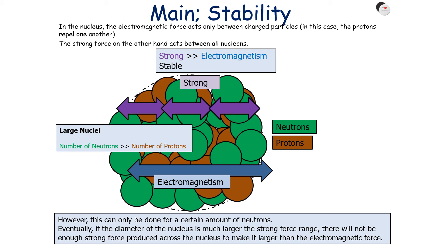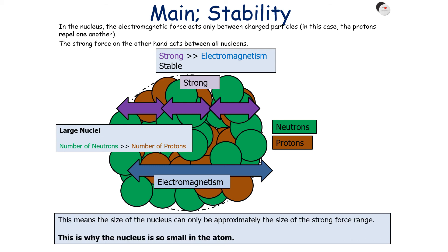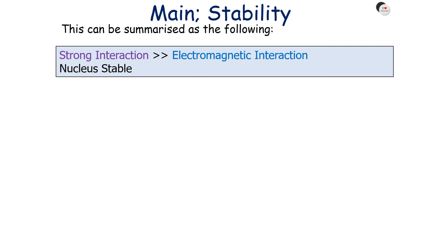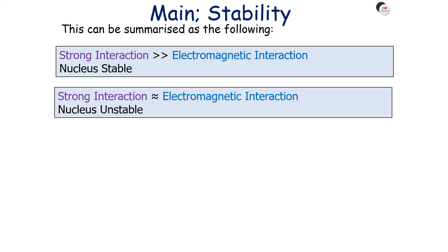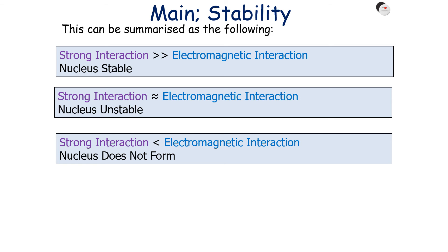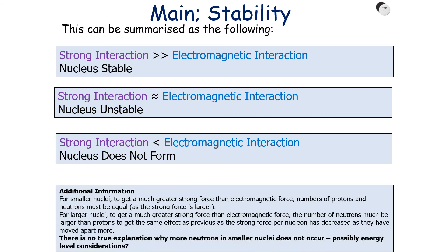This can only be done up to a certain number of neutrons. Eventually, if the diameter of the nucleus is much larger than the strong force range, there will not be enough strong force across the nucleus to overcome the electromagnetic force. This means the nucleus can only be approximately the size of the strong force range, which is why the nucleus is so small compared to the atom. In summary: if the strong interaction is much greater than electromagnetic, the nucleus is stable; if they are approximately equal, the nucleus is unstable; and if electromagnetic is greater than strong, the nucleus does not form.